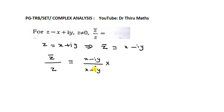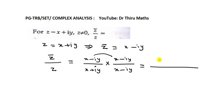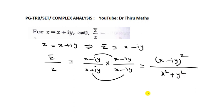The conjugation of X plus iY is X minus iY. So we multiply both numerator and denominator by X minus iY. Then in the numerator, X minus iY into X minus iY gives us (X minus iY) squared. For the denominator, the product of a complex number and its conjugate gives real part squared plus imaginary part squared — that is, X plus iY into X minus iY gives X squared plus Y squared.